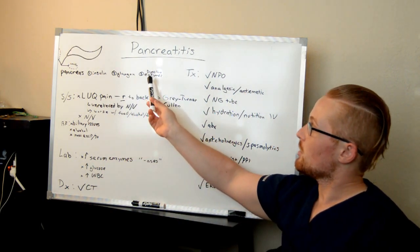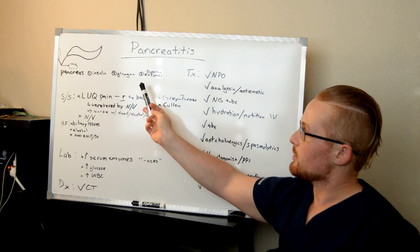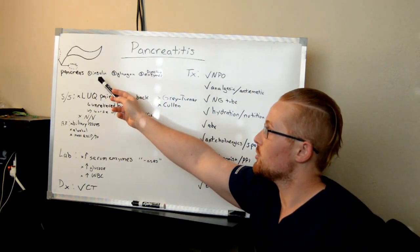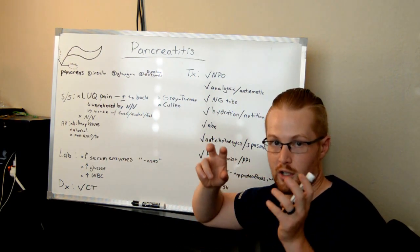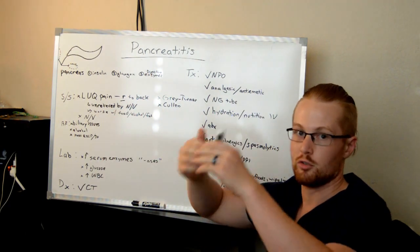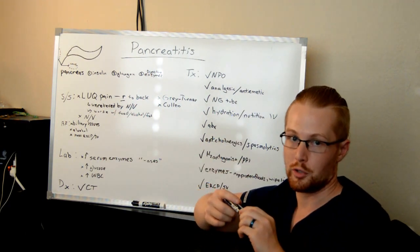So the pancreas is important for making the digestive enzymes. But it's also important for controlling glucose, serum glucose levels, by producing insulin, which decreases blood sugar by allowing it to be absorbed by the cells, and glucagon, which signals the body to produce more glucose.